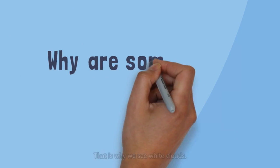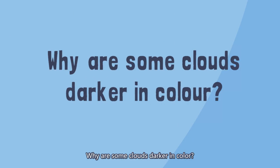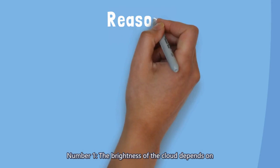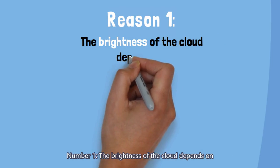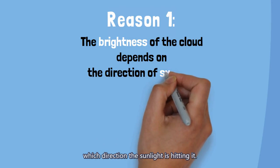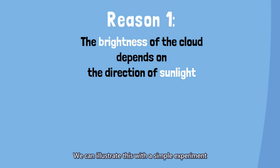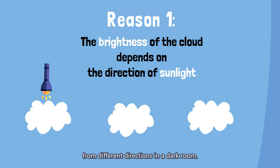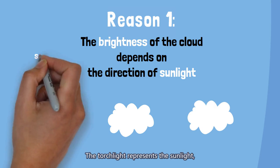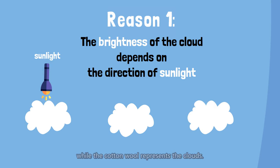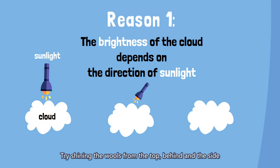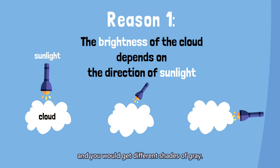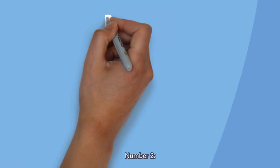That is why we see white clouds. Why are some clouds darker in color? Two reasons. Number one: the brightness of the cloud depends on which direction the sunlight is hitting it. We can illustrate this with a simple experiment by shining a torchlight on a few bales of cotton wool from different directions in a dark room. The torchlight represents the sunlight while the cotton wool represents the clouds. Try shining from the top, behind, or the side, and you would get different shades of gray.